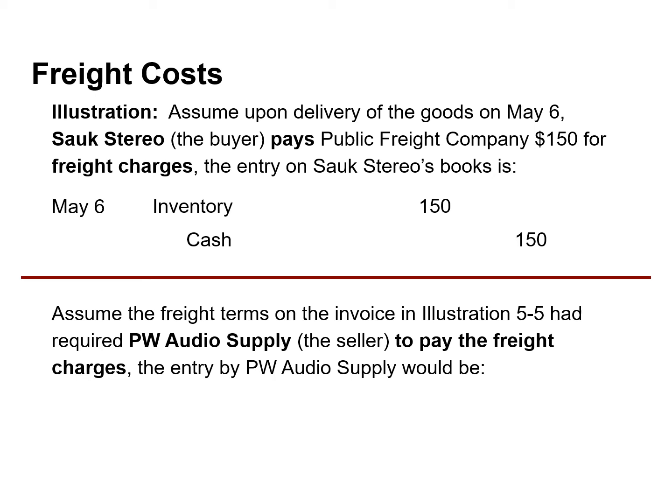These costs increase an expense account titled freight out, or sometimes called delivery expense. For example, if the freight terms on the invoice had required that PW Audio Supply, the seller, pay the $150 freight charges, the journal entry on May 4 would be a debit to freight out for $150 and a credit to cash for the same amount.